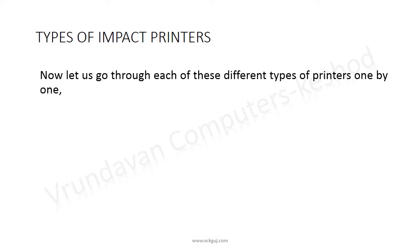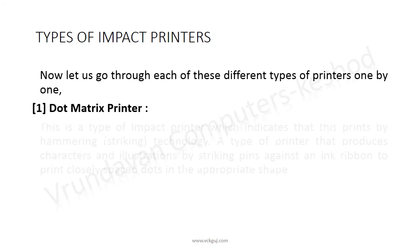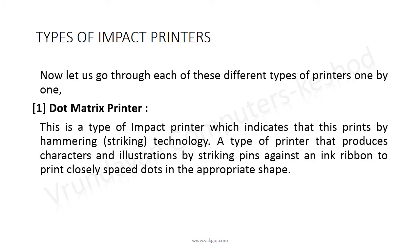Now let us go through each of these different types of printers one by one. Dot matrix printer: this is a type of impact printer, which indicates that it prints using hammering or striking technology. It is a type of printer that produces characters and illustrations by striking pins against an ink ribbon to print closely spaced dots.